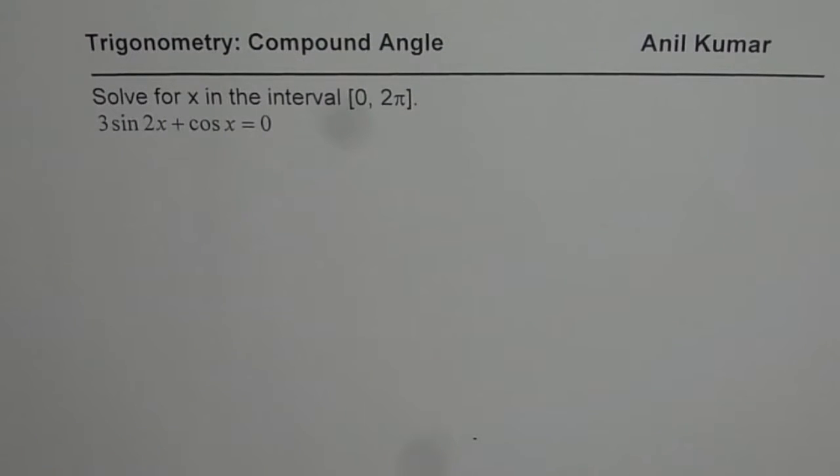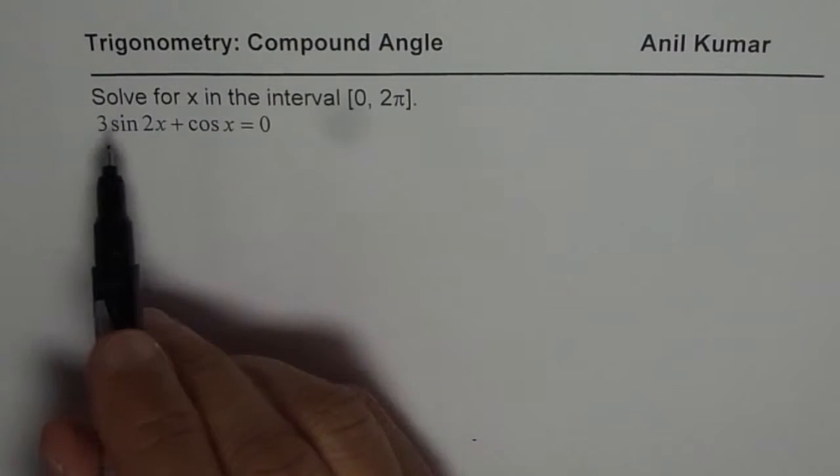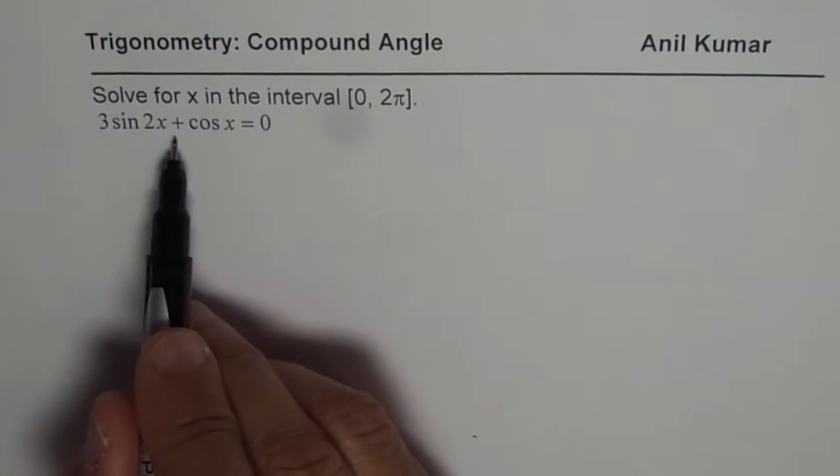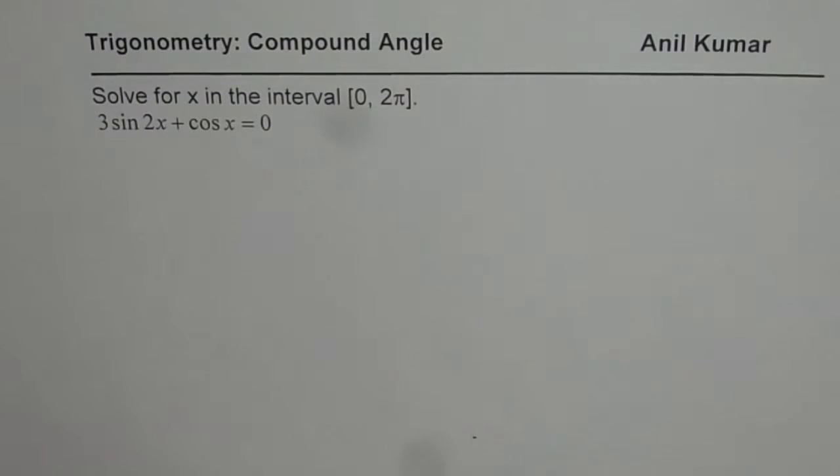I am Anil Kumar and we will solve a trigonometric equation with compound angle in this particular video. Solve for x in the interval 0 to 2π. 3sin2x + cosx = 0. That is the equation given to you.